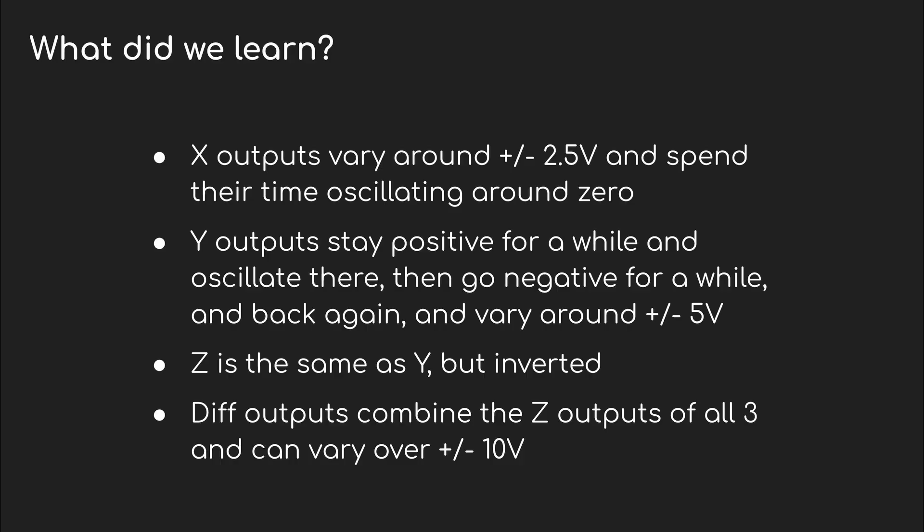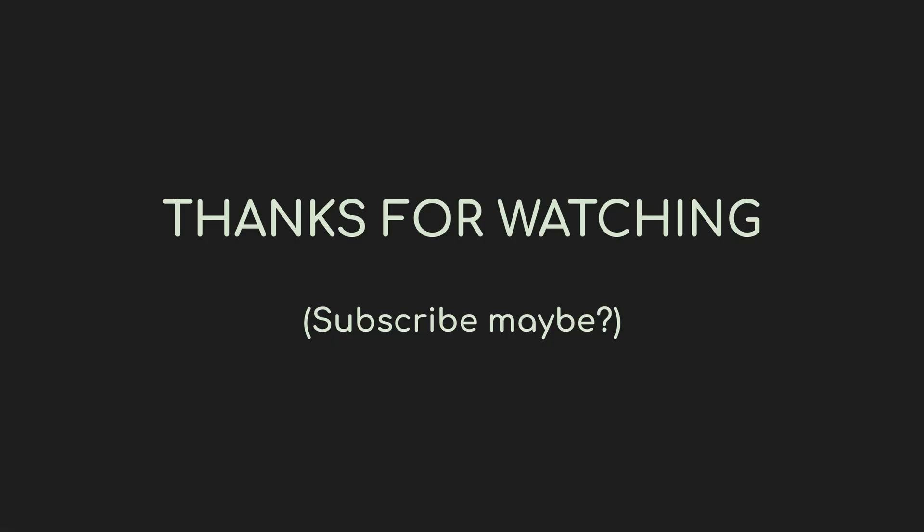Time to wrap things up. We learned a lot about how Sloths behaves, and it's worth recapping. First, the X outputs are the lowest — they stay in the plus or minus 2.5 volt range and tend to oscillate around zero. The Y output, on the other hand, stays in the positive range for a while, then down to negative, then back up to positive — it doesn't spend much time close to zero, so voltages tend to cover a wider spread from plus to minus 5 volts. The diff outputs are a combination of all three sloths, which makes them the most varying of the outputs, but it can lead to some pretty crazy CV levels of plus or minus 10 volts. And that's Triple Sloths. I hope you enjoyed this video going under the hood of one of my favorite modules. If you've watched this far, maybe consider subscribing. Thanks for watching.